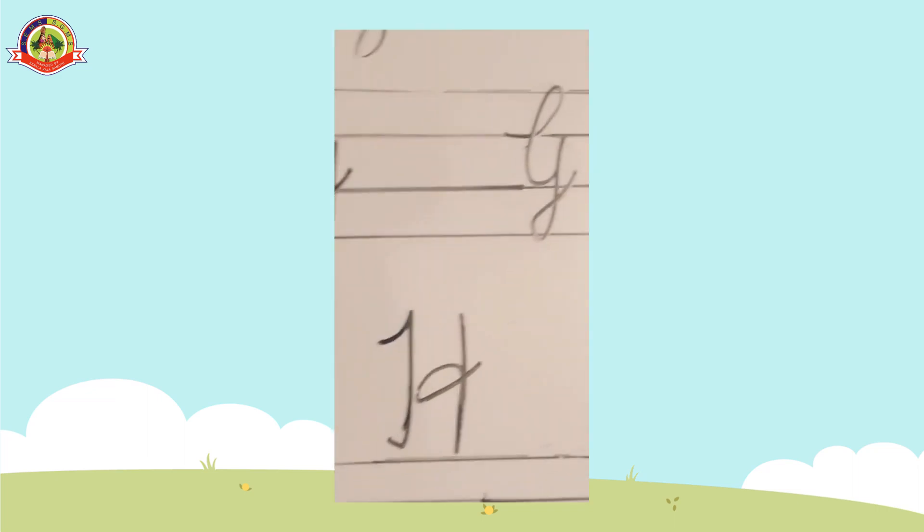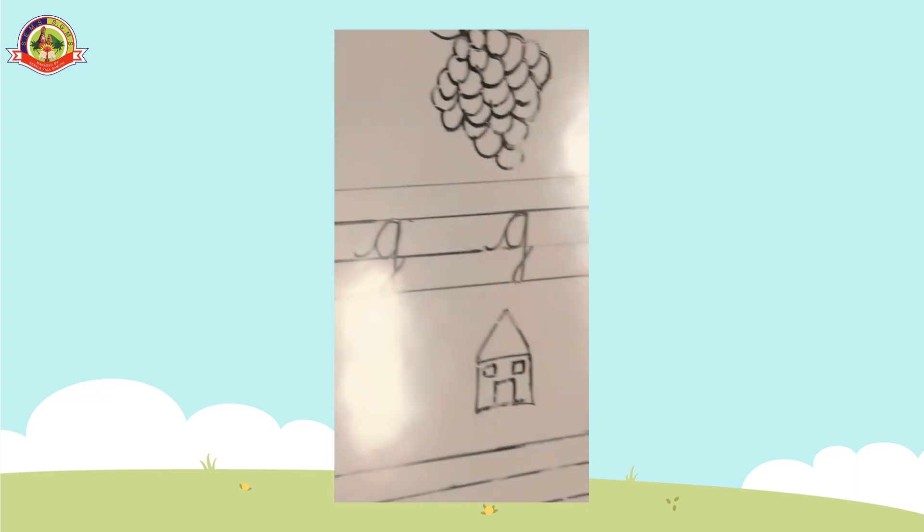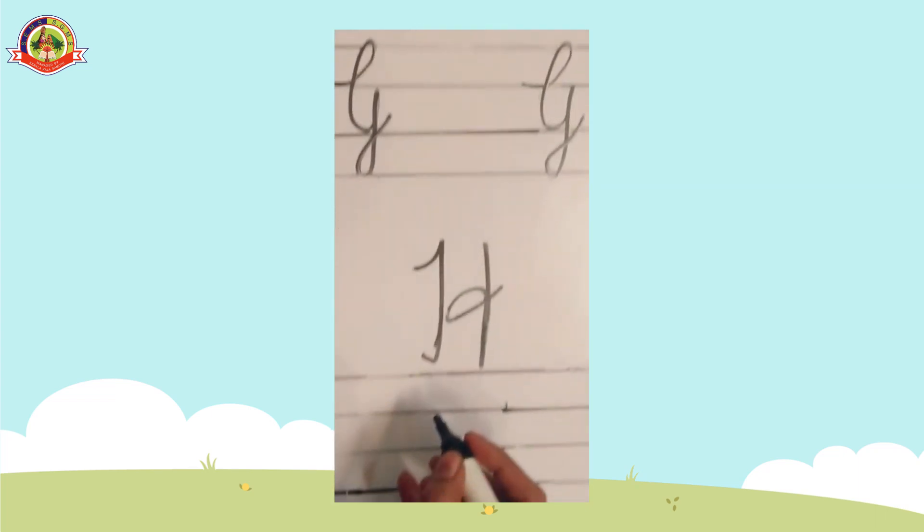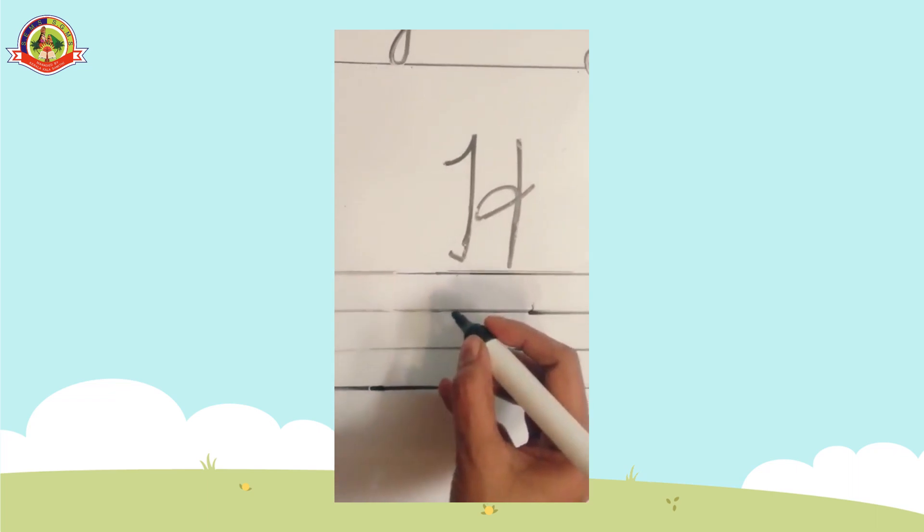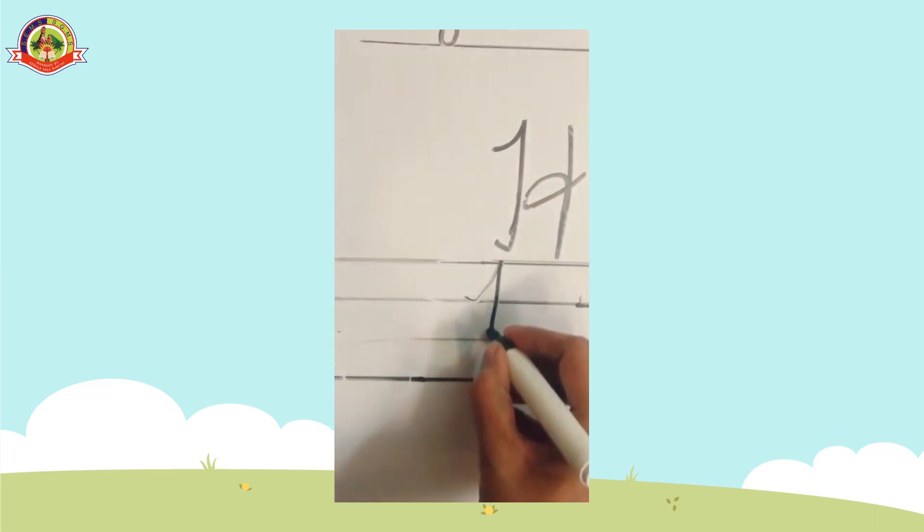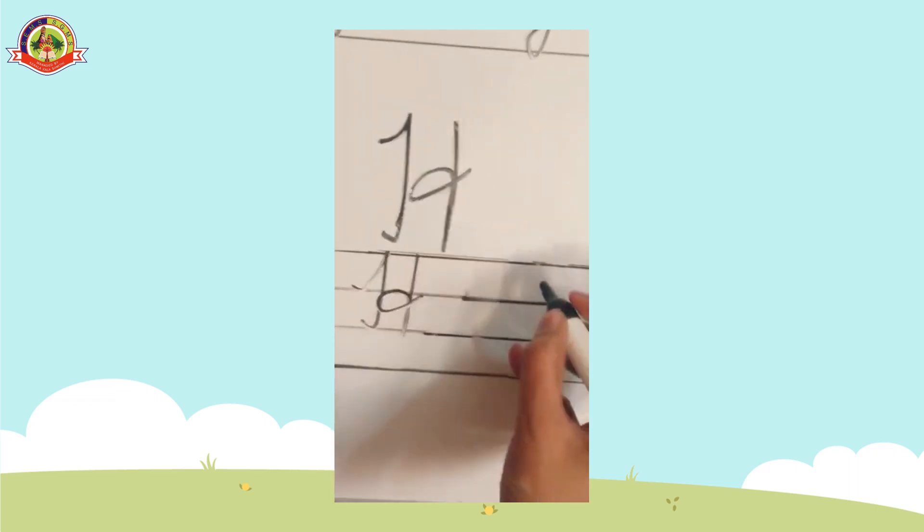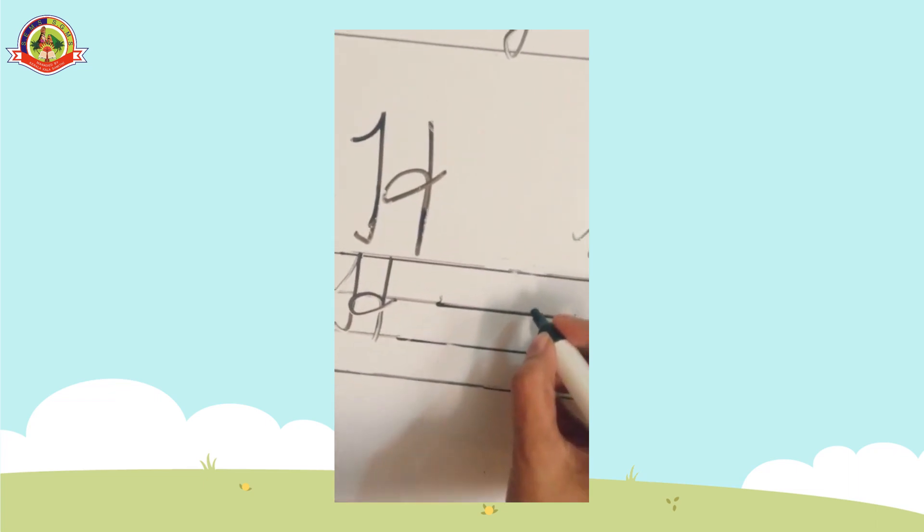Now, you know capital and small cursive G. Next, capital cursive H. Capital cursive H. Next, once again, I am writing capital cursive H.